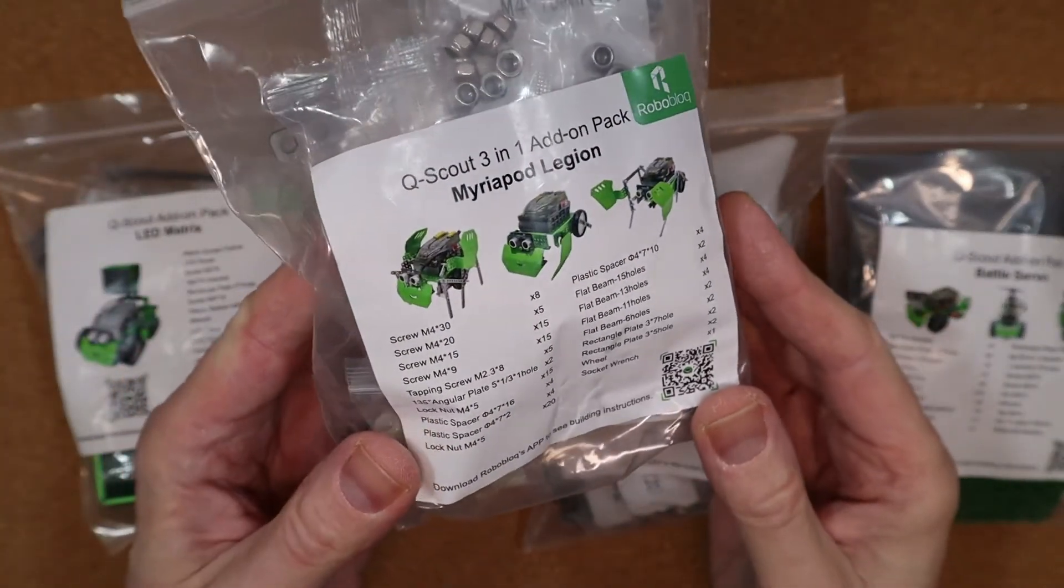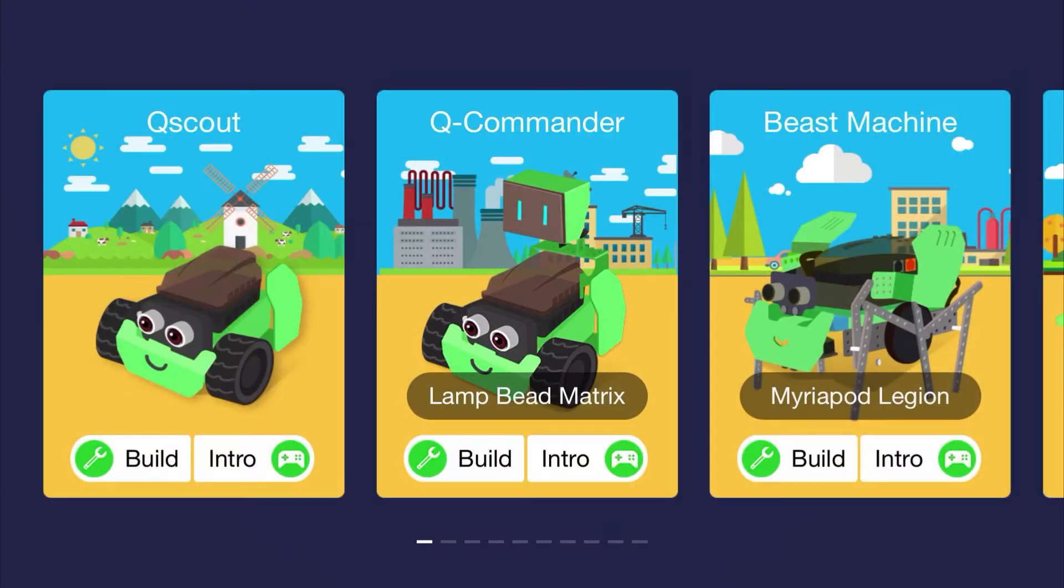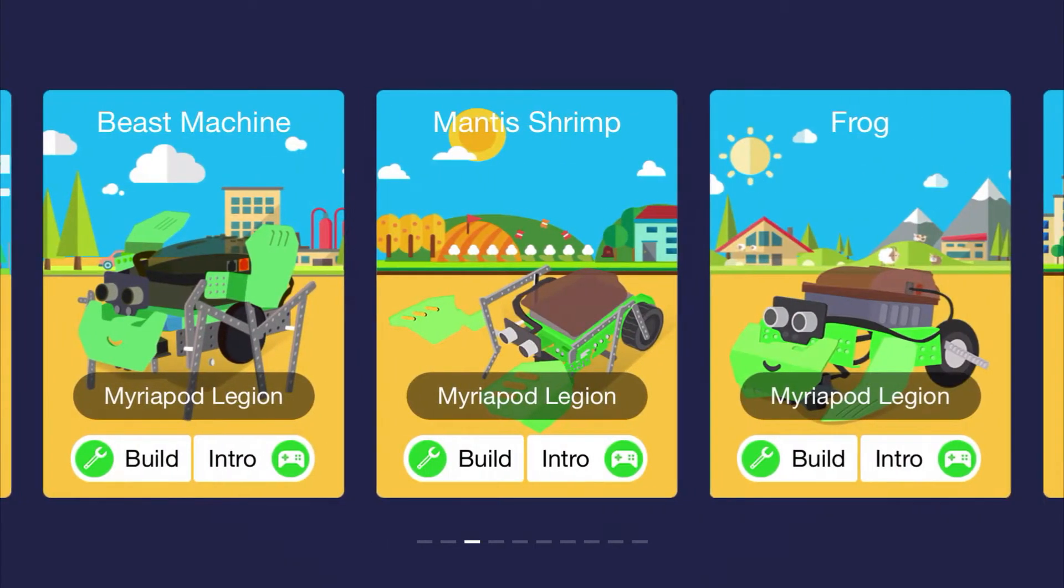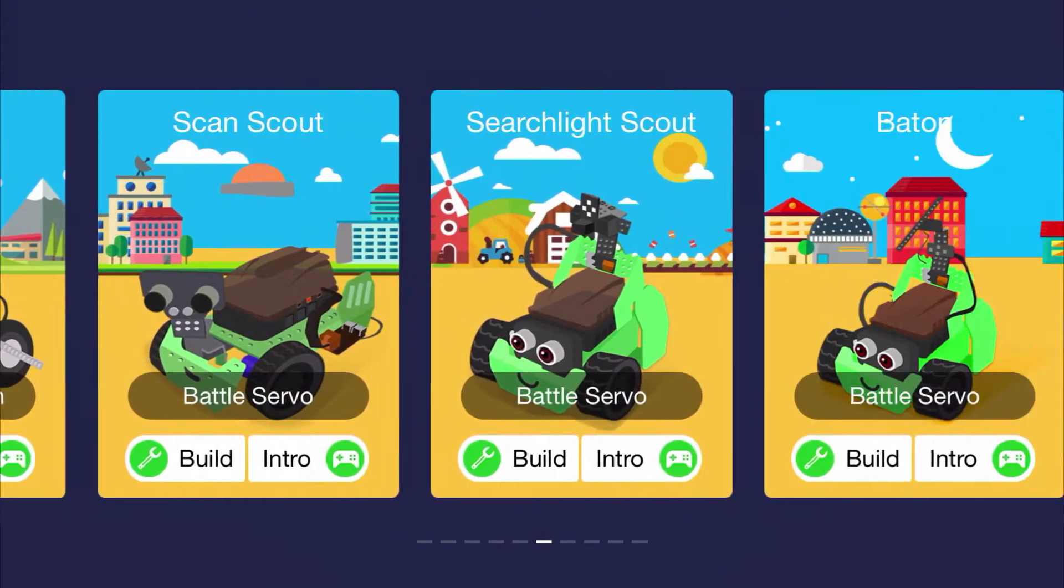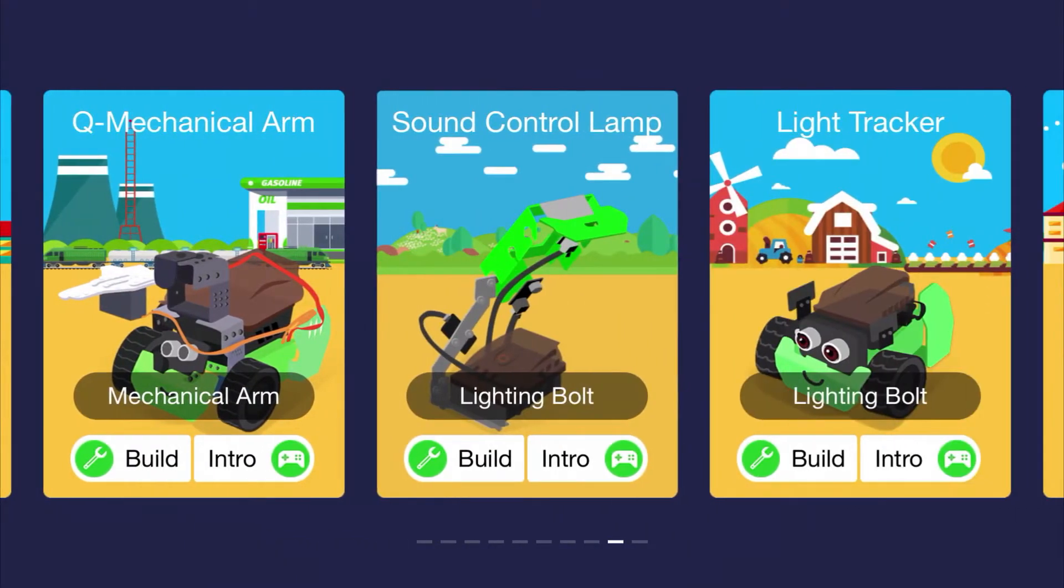Of course you can use the parts to design your own robot, but it's great to have so many options and all with their own build instructions. And now all we have to do is test Q-Scout to see that it's working.